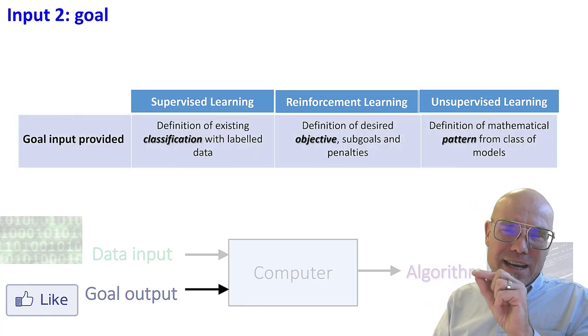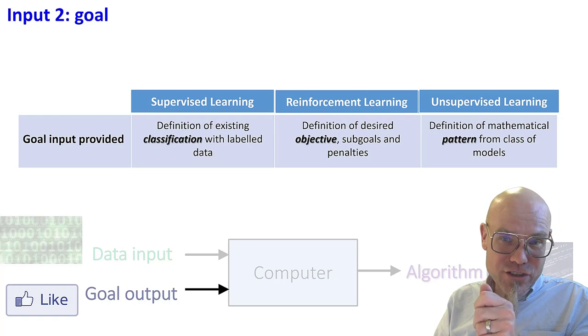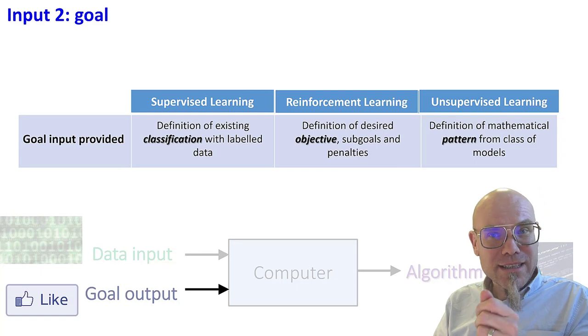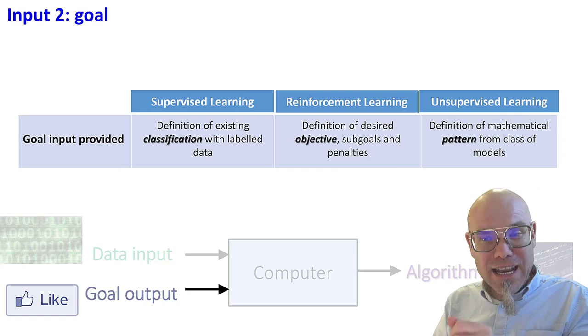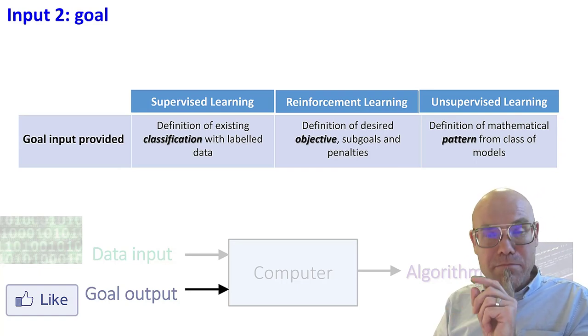So supervised learning gives you a classification. It learns by giving rewards or losses towards working with pre-established classifications. Reinforcement learning goes with an objective and unsupervised learning goes with a pattern.